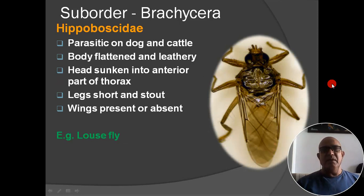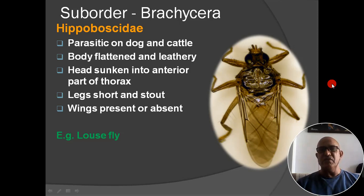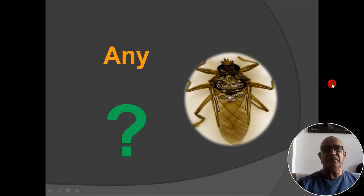Next family: Hippoboscidae. Parasitic on dogs and cattle; body flattened and leathery; head sunken into the anterior part of thorax; legs short and stout; wings present or absent. Example: louse fly.